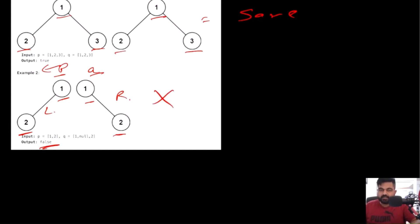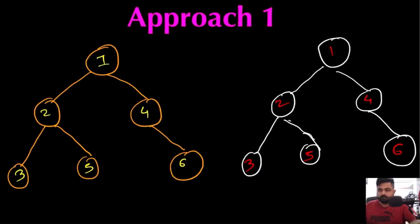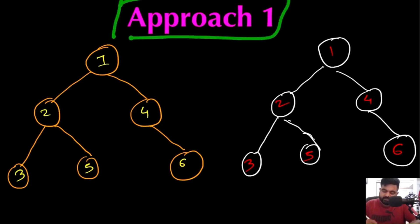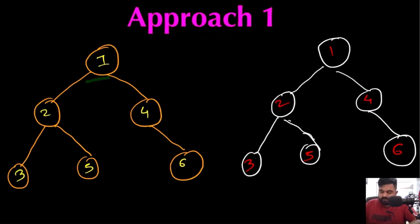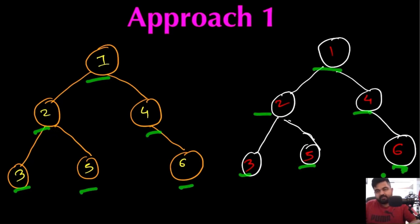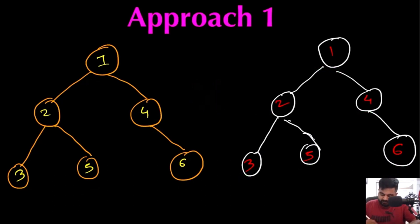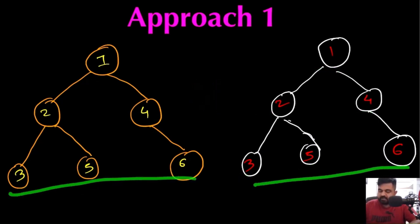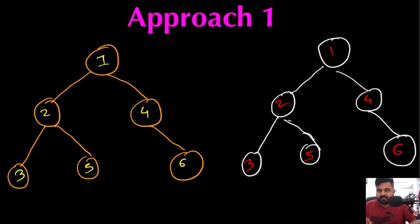Let's see the different approaches to solve this problem. The solution is quite simple. In approach 1, we use an iterative approach — we iterate over both trees in the same manner, checking subsequent nodes at every position. At any given moment, if we identify that any single node does not match, we can return false immediately. If we reach the end of the tree having checked every node, we return true.